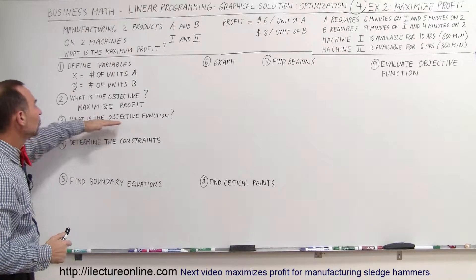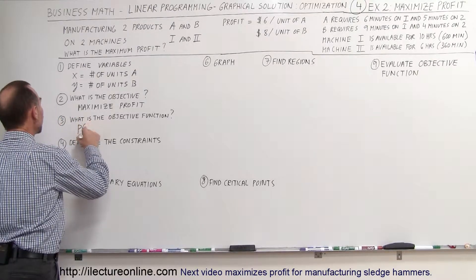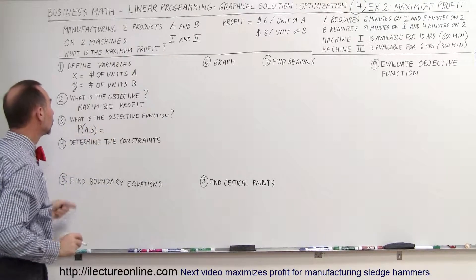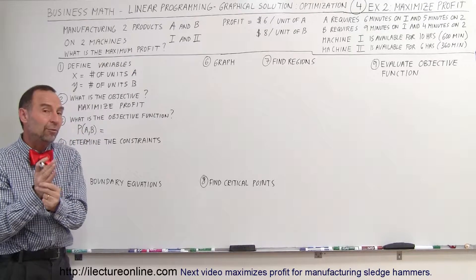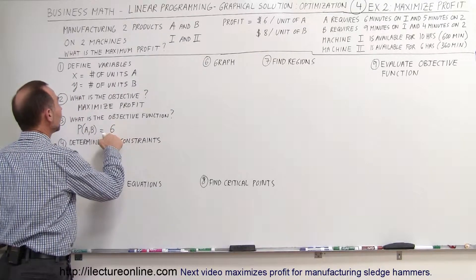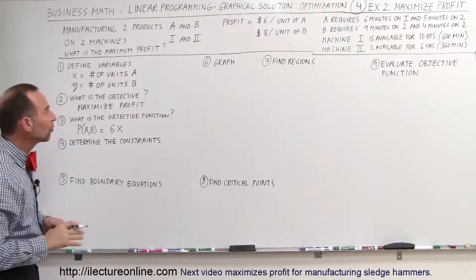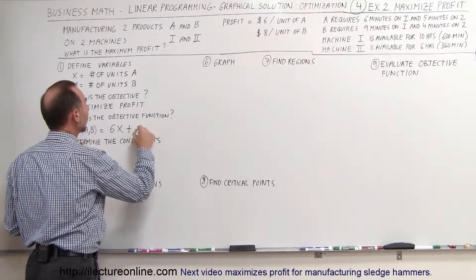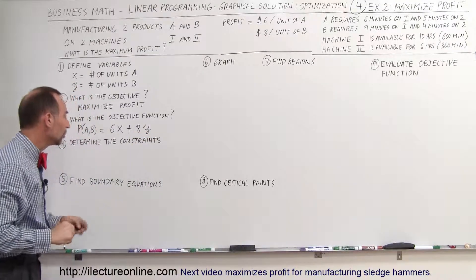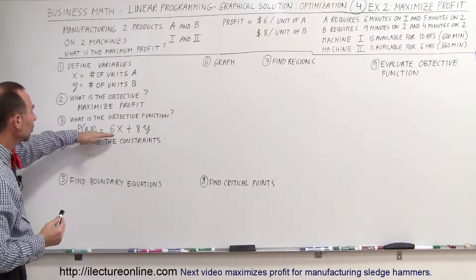Step three: come up with the objective function. We need to define in a function how much profit we're going to make. The profit is a function of A and B — the two products being produced. Profit equals $6 for each unit of A times X (the number of units of A), so 6X, plus $8 per unit times Y (the number of units of B), giving us 8Y. So the objective function is P = 6X + 8Y.